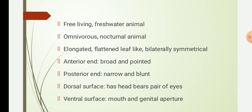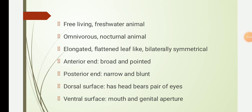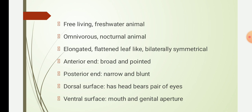Planaria has an elongated, flattened, leaf-like, bilaterally symmetrical body. It grows from 15 to 50 mm long. It has a definite anterior and posterior end, and dorsal and ventral surfaces. Anterior refers to the head region, posterior refers to the hind end, dorsal is the back side, and ventral is the front side.